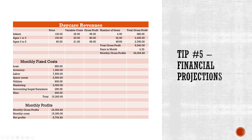Next, estimate the average number of children per age group. For example, anticipating four infants multiplied by a gross profit of $95 gives you $380 weekly gross profit for that bracket. Do this for each age bracket and total them. Then multiply by 4.33 (weeks per month) to get monthly gross profit — in this example, $24,482. Plug that figure into your profit model.